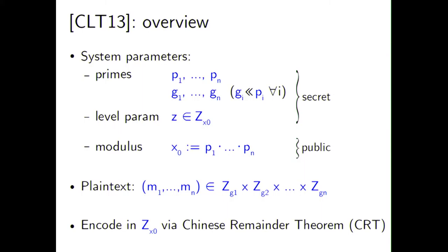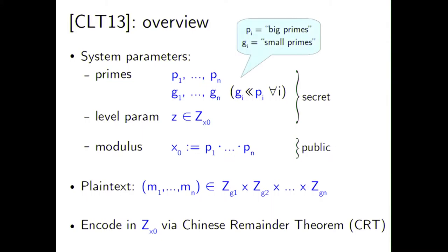CLT13 initializes by generating system parameters: two sets of primes, P_1 through P_N (the big primes) and G_1 through G_N (the small primes), where the G primes are much smaller than the P primes. There is also a secret integer Z used to denote the level in an encoding. The public key includes the modulus X_0, which is the product of the big primes P_1 through P_N.